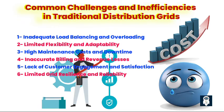One: Inadequate load balancing and overloading. One of the key pain points in traditional distribution grids is the inability to balance loads effectively, leading to overloading in certain areas. This results in voltage fluctuations, increased losses, and potential equipment damage.